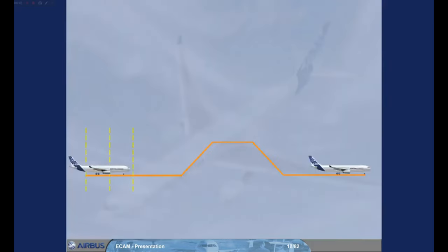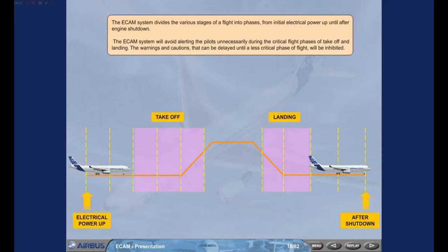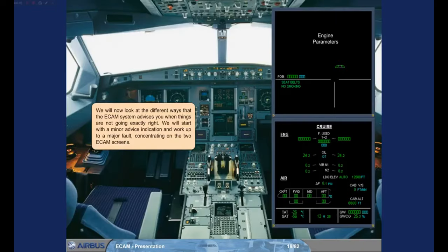The ECAM system divides the various stages of a flight into phases, from initial electrical power-up until after engine shutdown. The ECAM system will avoid alerting the pilots unnecessarily during the critical flight phases of takeoff and landing. The warnings and cautions that can be delayed until a less critical phase of flight will be inhibited. We will now look at the different ways that the ECAM system advises you when things are not going exactly right, starting with a minor advice indication and working up to a major fault, concentrating on the two ECAM screens.